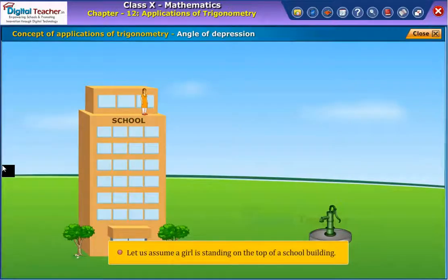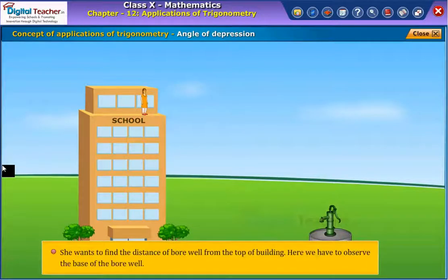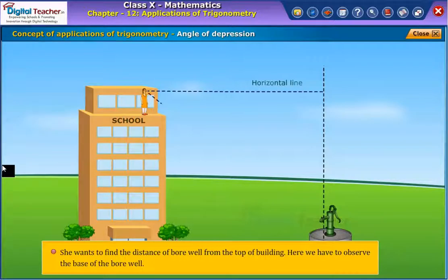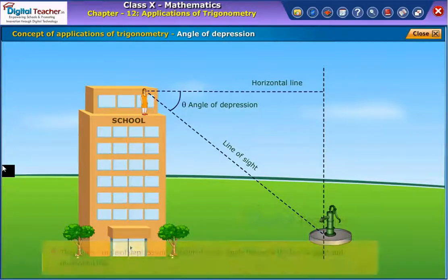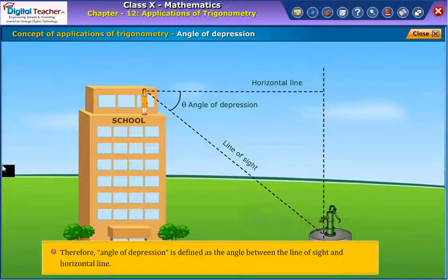Let us assume a girl is standing on the top of a school building. She wants to find the distance of borewell from the top of building. Here we have to observe the base of the borewell. Then from the figure, we observe that the line of sight from the girl's eye to the base of borewell is below the horizontal line. Therefore, angle of depression is defined as the angle between the line of sight and horizontal line.